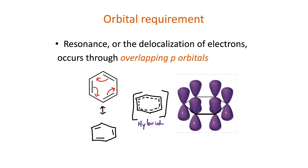On the right, you can see p orbitals drawn on benzene. These are all perpendicular to the plane of the ring and parallel with each other. Overall, they overlap and form a conjugated pi system through which electrons can be delocalized.